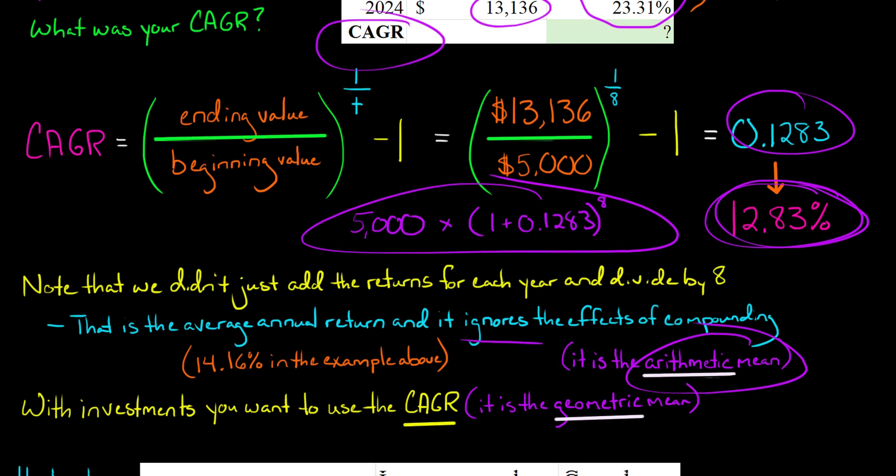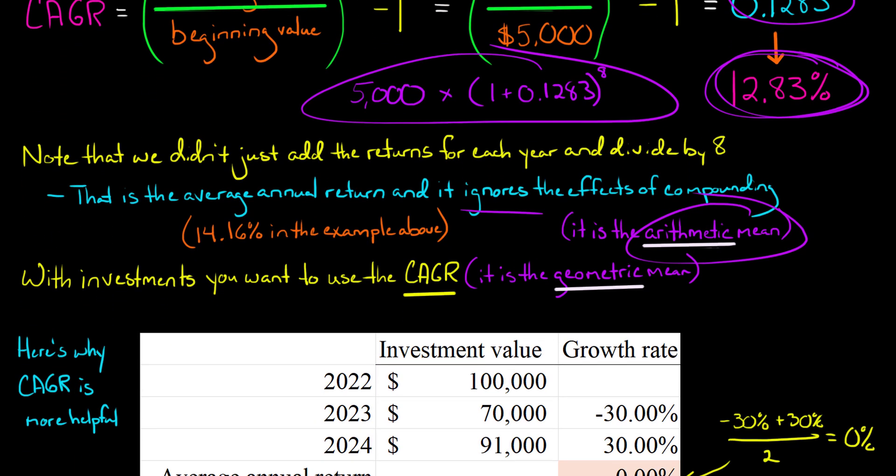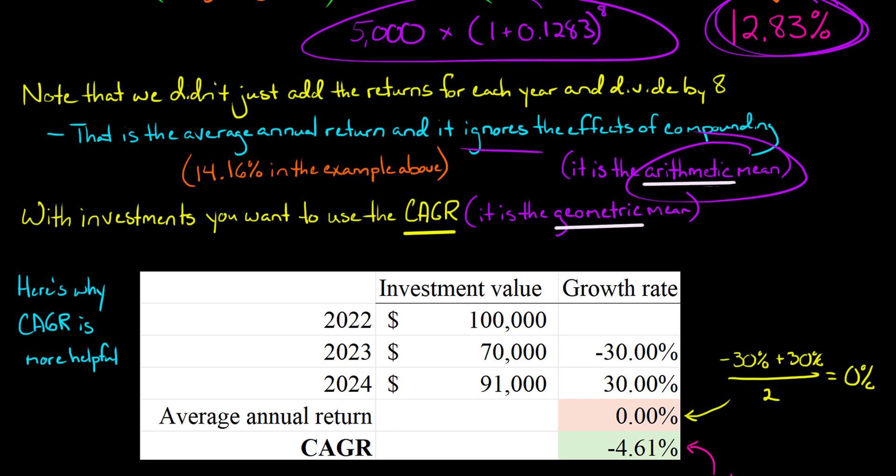So I don't want to get too wordy here with you. Let me show you why this matters. Because if you're thinking, who cares? Why does it matter? Why don't we just average the growth rates? Well, here's a simple example. Let's say at the end of 2022, you invested $100,000. And let's say that you lose 30% on that investment the very first year, 2023. So now you're at $70,000, right? Because 30% of $100,000 is $30,000. You have a $30,000 loss. It went from $100,000 to $70,000.